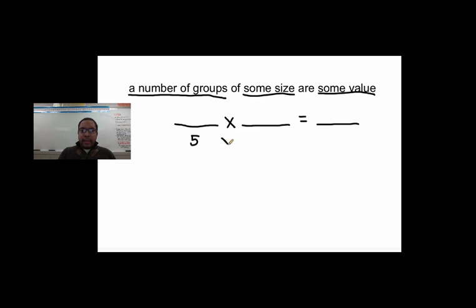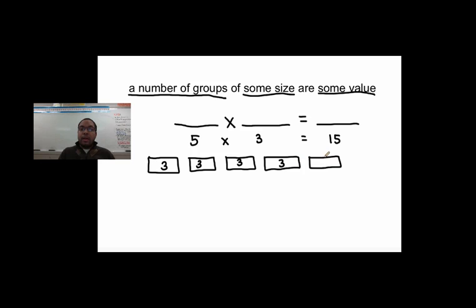So let's give an example. Say we have 5 times 3 equals 15. So this means that I have 5 groups, so let me show that. I have 5 groups, so I have 1 group, 2 groups, 3 groups, 4 groups, and 5 groups. And the size of each group is 3. So there's 3 there, 3, 3, 3, and 3. And if I put these all together, then I would get 15.